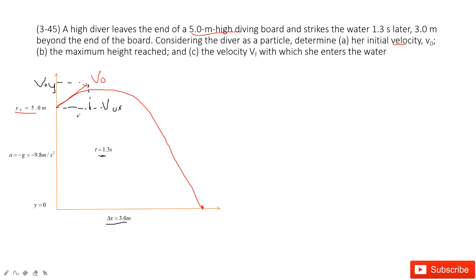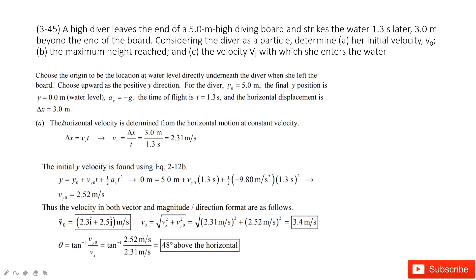Now let's look at the y component. We know the initial position, we know the final position, we know acceleration, and we also know time t. Can you find the initial velocity? Yes. We can find the y component initial velocity using the kinematic equation. We know final position, initial position, acceleration, and time t — so it's easy to get the initial velocity at the y component.